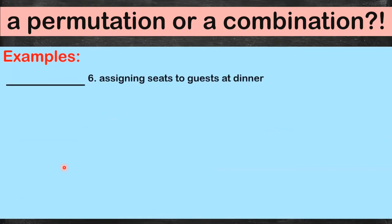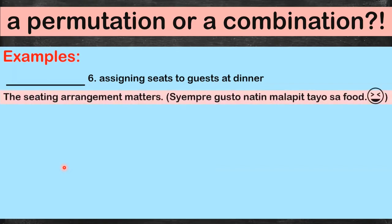What about assigning seats to guests at dinner? Of course, the seating arrangement matters — everyone wants to be close to the food! So obviously, this is a permutation problem.